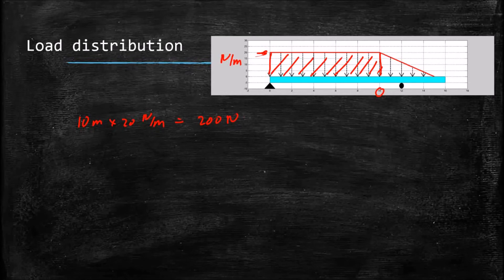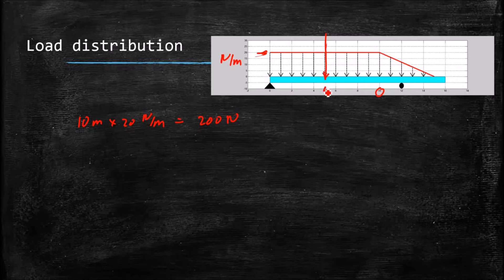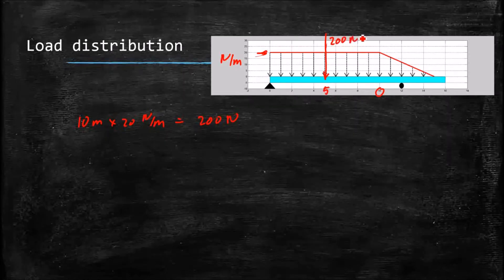And it's a rectangle, so we know that the centroid of that rectangle is right smack dab in the middle. So here at 5 meters, we have a force of 200 newtons equivalent.